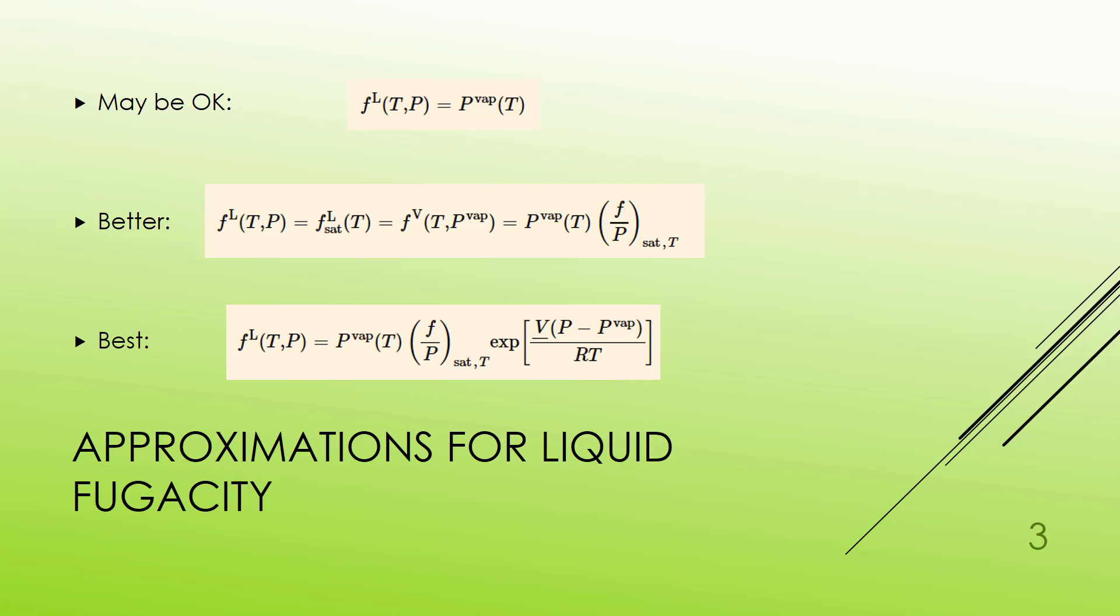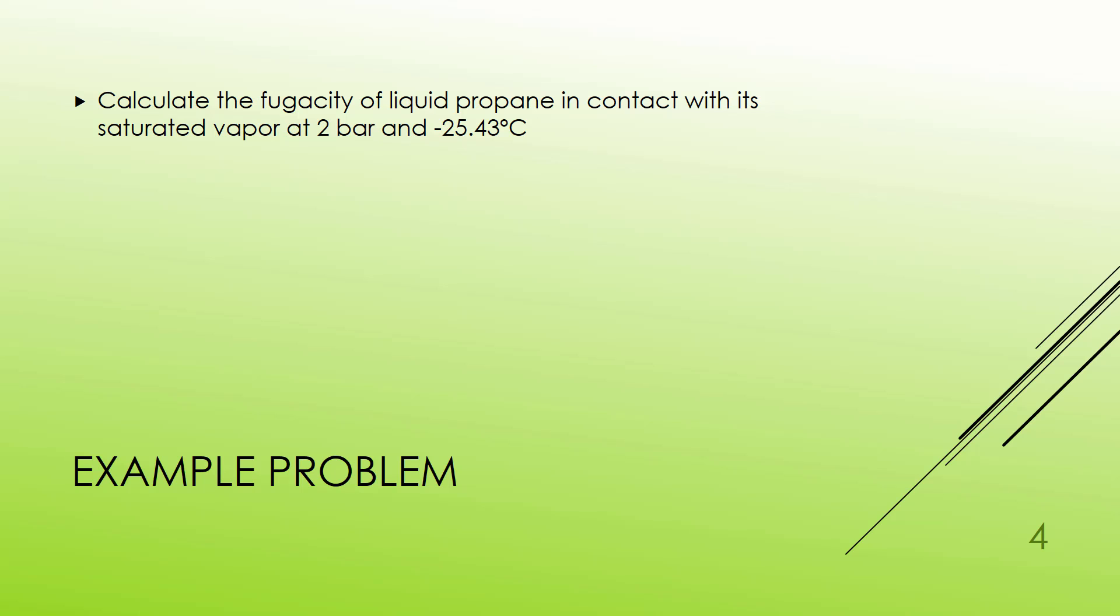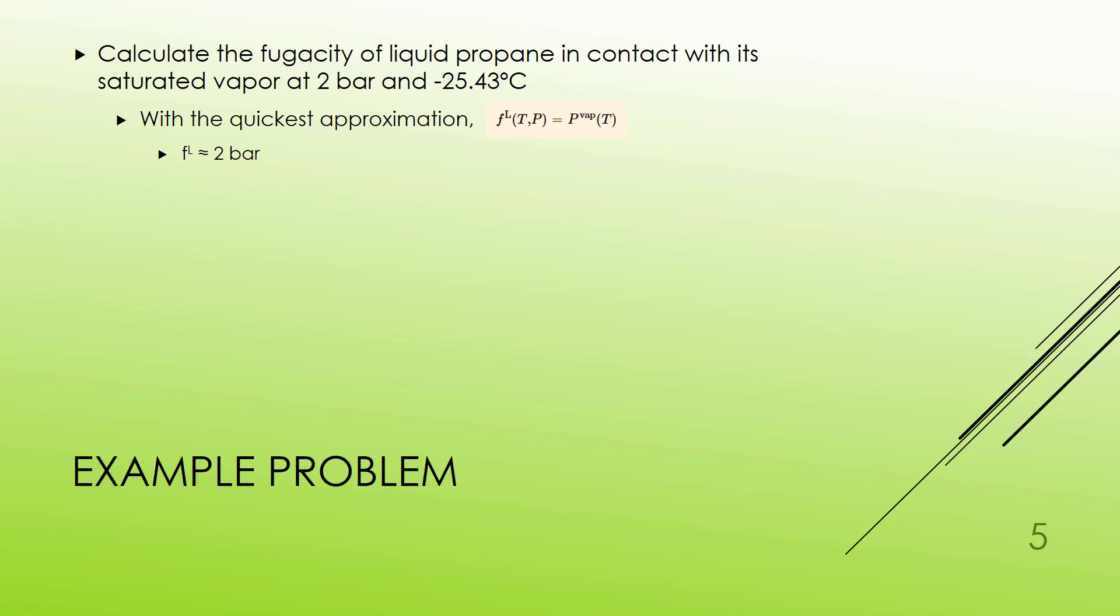Let's put this into practice. So let's calculate the fugacity of liquid propane in contact with its saturated vapor at 2 bar and negative 25.43 degrees C. So this is the saturation temperature and pressure pair. So I'm looking for saturated liquid propane fugacity. The quick approximation is just simply to say that it's going to be the vapor pressure. So 2 bar is roughly an answer. And if that's all the time I want to put into this problem then I can accept that. But I can do better.